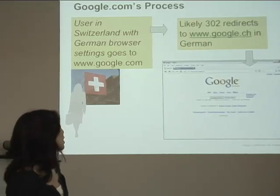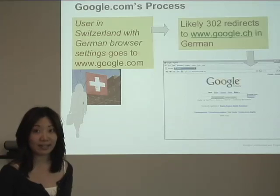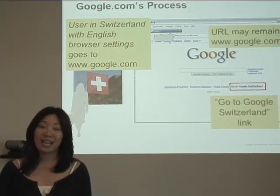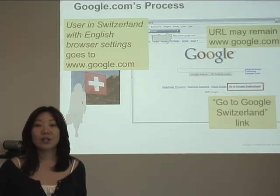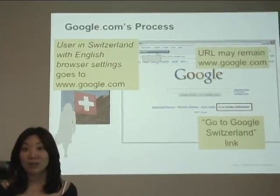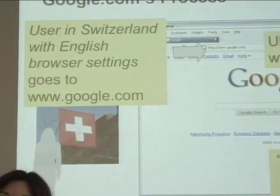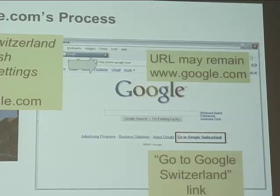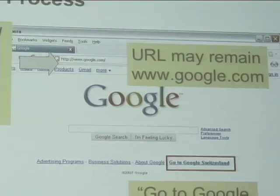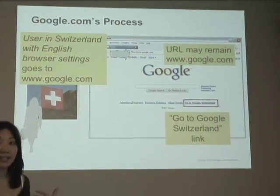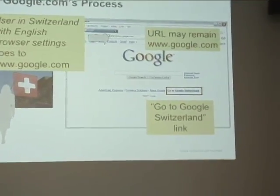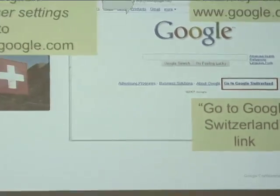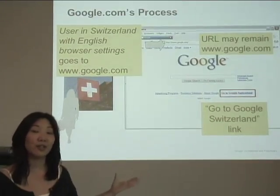So in this instance, Google not only utilized the IP address but also the language settings. A slight variation: let's say you're a user in Switzerland, but you're just vacationing — an American who's just there. You still have that Switzerland IP address, but your browser is set to English. If this user visits www.google.com, instead of being redirected, their URL may likely remain www.google.com and they'll see similar content to users in the United States. But because of their IP address, this page was updated with a link that says, 'Go to Google Switzerland.' So again, Google uses the IP address to serve this user better information.